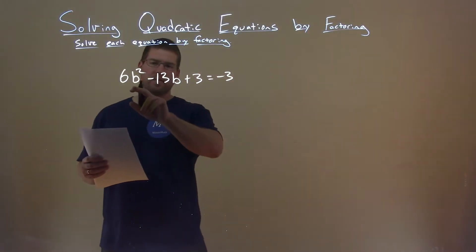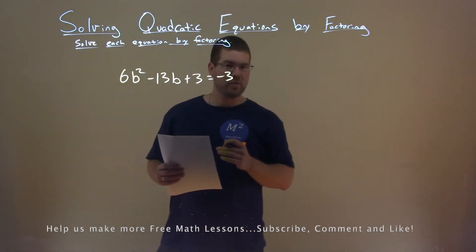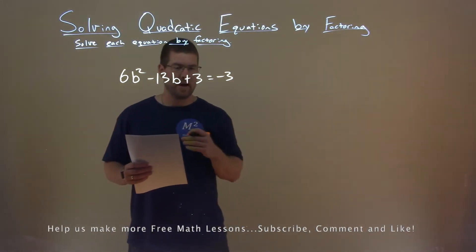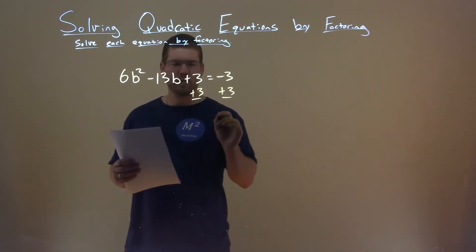We're given this problem right here. 6b squared minus 13b plus 3 equals negative 3, and we want to solve this by factoring. First thing I'm doing is I'm adding 3 to both sides. Let's get this equal to 0.